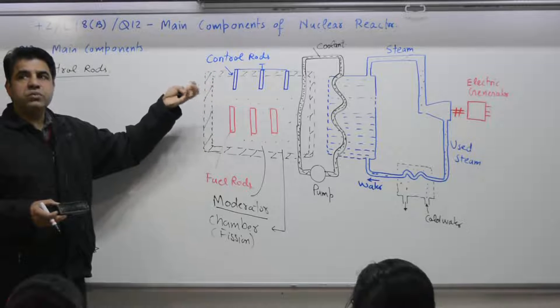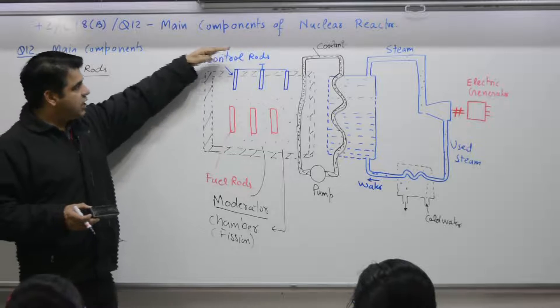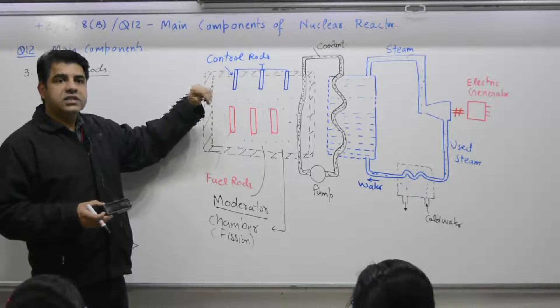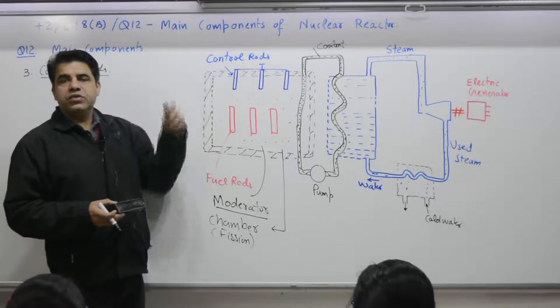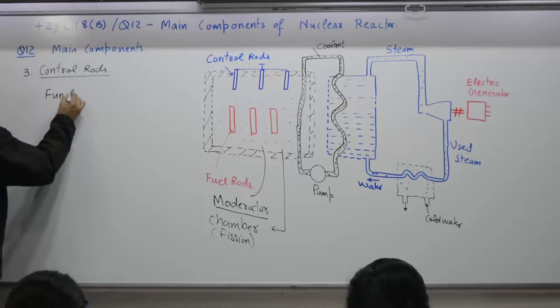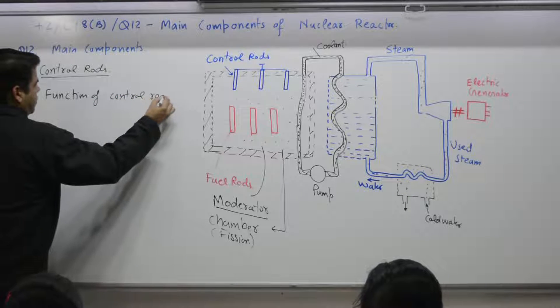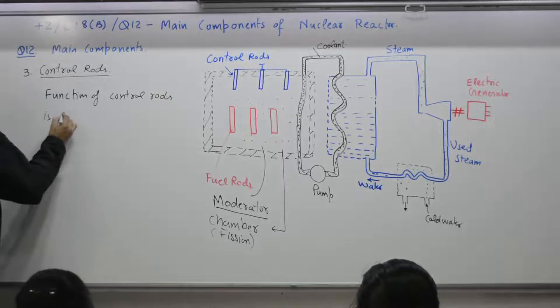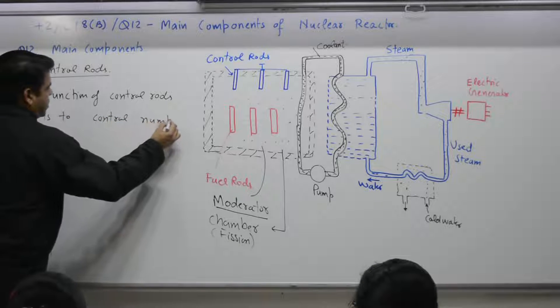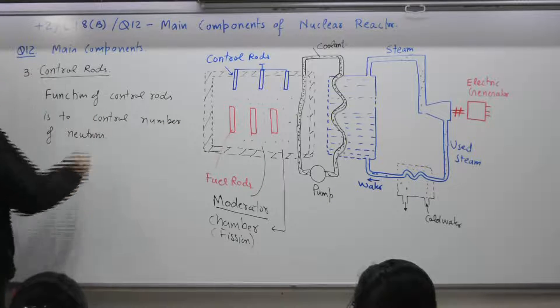You can increase or decrease the energy use. Here, control rods will do what? Will control the number of neutrons being produced. If the number of neutrons produced are more and you want to absorb, increase its length. Move it downwards. So that they will absorb neutrons. If you want to increase number of neutrons, move the rods upward. What is the function of the control rods? Function of controlled rods is to control number of neutrons.